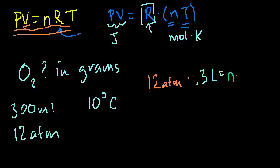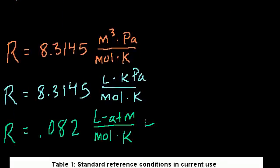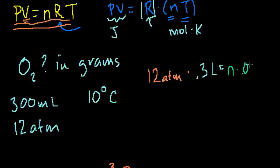So it's equal to n times R. Now which R should we use? We're dealing with liters and atmospheres. We'll deal with this one: liters, atmospheres, mole, Kelvin, 0.082. And then what's our temperature? It's 10 degrees Celsius. We always have to do everything in Kelvin. So it's 283 degrees Kelvin.